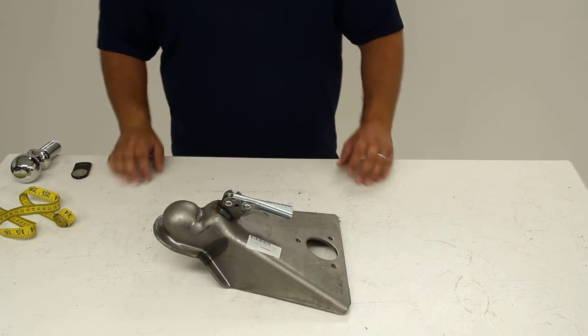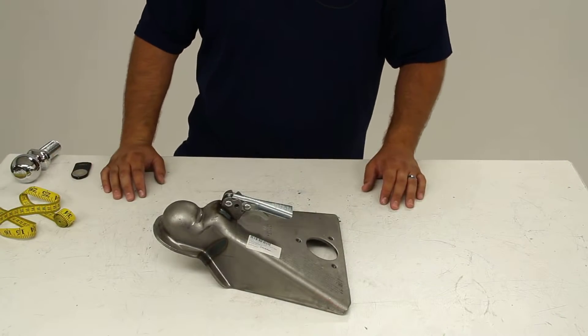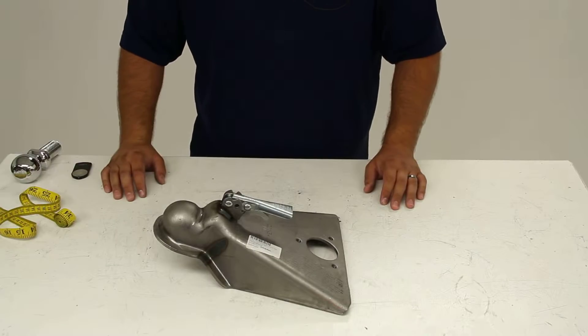Today we're going to take a quick look at the Fulton A-Frame Coupler for 2 and 5 sixteenths balls, part number F44305R0500.